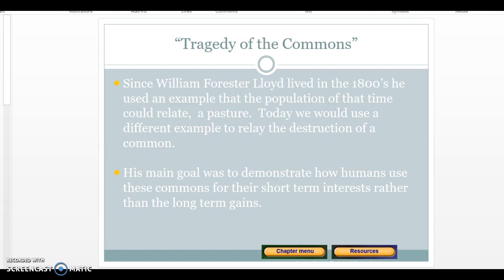At the time, the biggest issue was population. So when you read Garrett Hardin's rebuttal to William Foster Lloyd, you'll see the main theme is population — but the commons problem is not limited to population; it's just the example given at the time. The main goal of the commons problem was to talk about our short-term gain. As humans we have an inherent need for greed, and this causes us to look at shared commons with a short-term goal rather than the long-term interest of that commons.